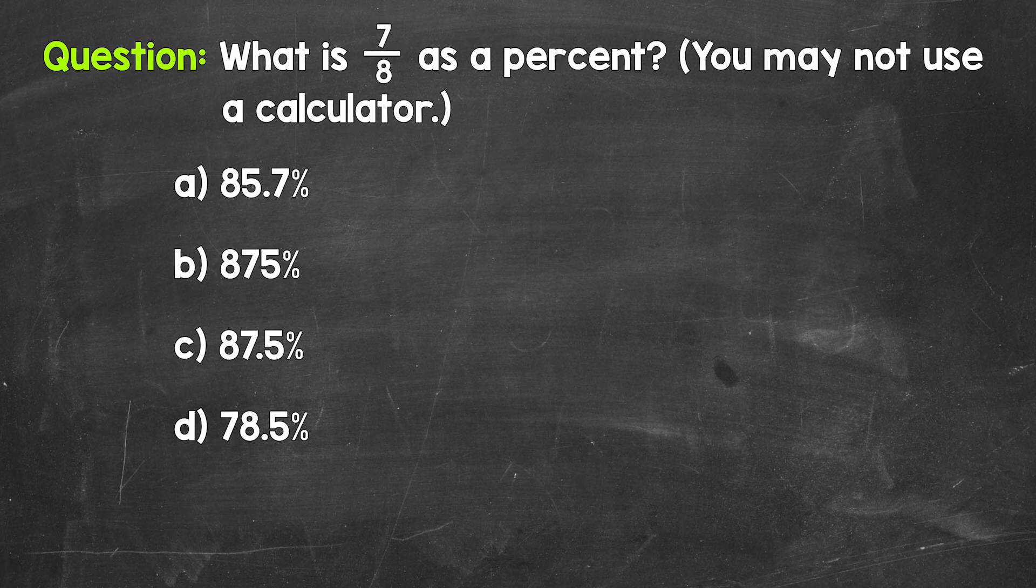This will give us a decimal. Once we have that decimal, we convert it to a percent by multiplying it by 100. And a quick way to multiply by 100 is to move the decimal twice to the right.